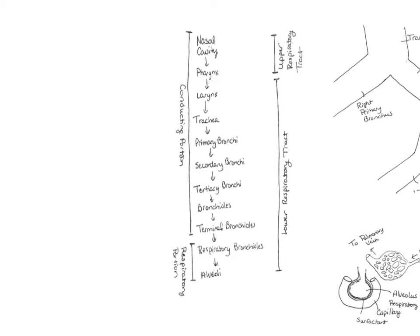The upper respiratory tract includes the nasal cavity and the pharynx. So if a person gets an upper respiratory infection, that's where they're getting the infection — in their nasal cavity, in their throat. The lower respiratory tract is everything below that: the larynx, trachea, primary bronchus, secondary bronchi, tertiary bronchi, bronchioles, terminal bronchioles, respiratory bronchioles, and the alveoli. Any infection there would be a lower respiratory tract infection.